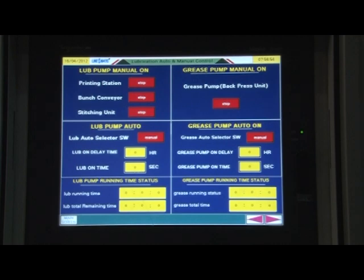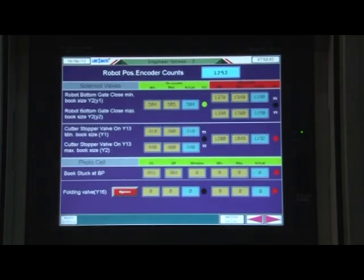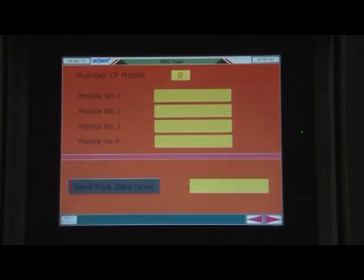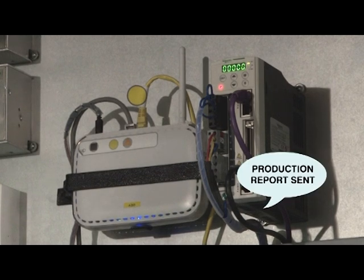Various functions like change in number of pages, production report, machine operation history as well as fault logs are being operated by the touch screen. Electronic panel is having modern facilities like internet connectivity and production reporting through SMS.